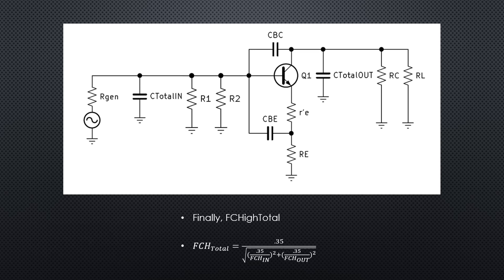Here's our final formula for calculating FC high total. It's 0.35 divided by the square root of quantity 0.35 divided by FC high in squared plus 0.35 divided by FC high out squared. That gives us our final FC high total for the circuit.